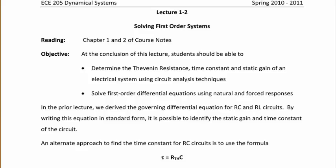In the prior lecture, we derived the governing differential equation for RC and RL circuits by writing the equation in standard form, and it's possible to identify the static gain and time constant by comparing it to the governing differential equation. An alternate approach is to find the time constant for RC circuits using the formula tau equals R_Thevenin times C, where R_Thevenin is the Thevenin equivalent resistance seen by the capacitor.